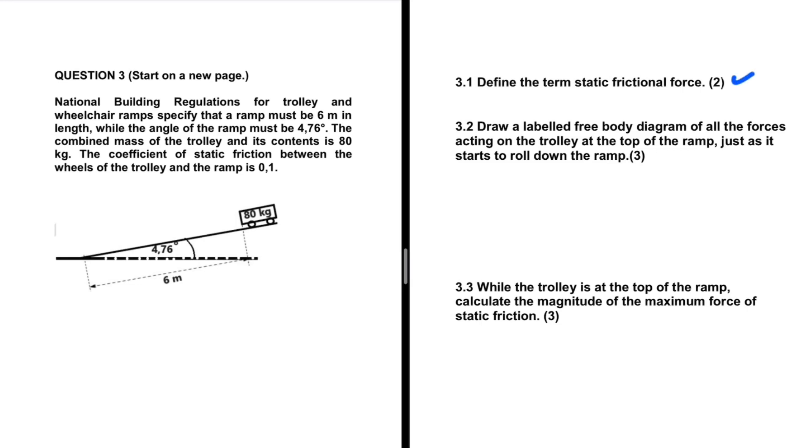Let's take a look at 3.2. Draw a labeled free body diagram of all the forces acting on the trolley at the top of the ramp, just as it starts to roll down the ramp. National Building Regulations for trolley and wheelchair ramps specify that the ramp must be 6 meters in length, while the angle of the ramp must be 4.76 degrees. The combined mass of the trolley and its contents is 80 kg. The coefficient of static friction between the wheels of the trolley and the ramp is 0.1. So there we go, that's the information we have.